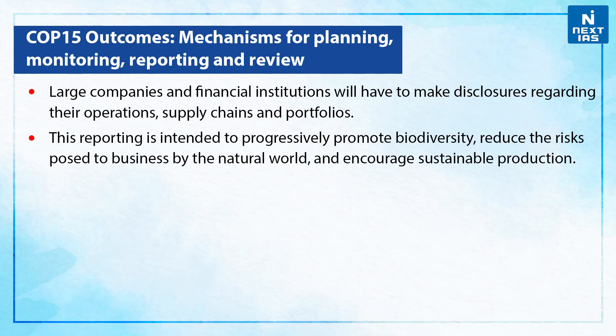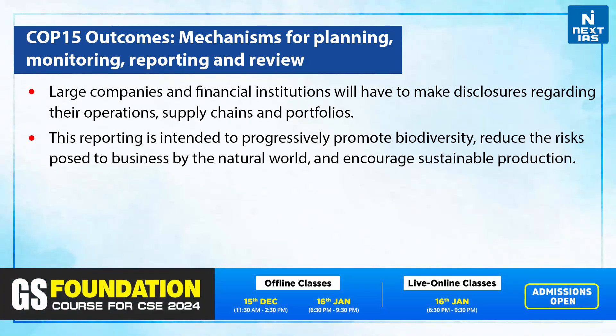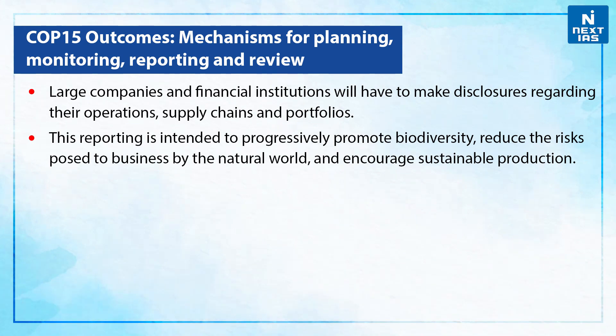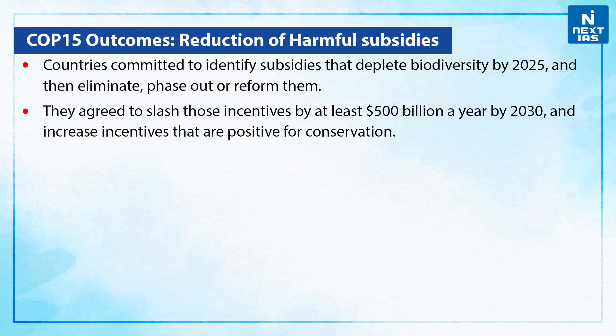Regarding the mechanism for planning, monitoring, reporting and review: large companies and financial institutions will have to make disclosures regarding their operations, supply chains and portfolios. This reporting is intended to progressively promote biodiversity, reduce the risk posed to businesses by the natural world, and encourage sustainable protection. On reduction of harmful subsidies, countries committed to identify subsidies that deplete biodiversity by 2025 and then eliminate, phase-out or reform them. They agreed to slash those initiatives by at least $500 billion a year by 2030 and increase initiatives that are positive for conservation.